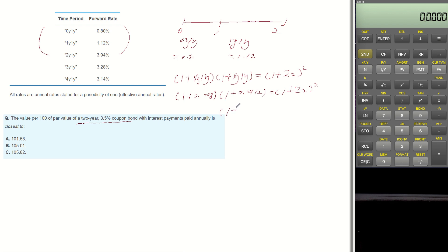Then 1 plus year 2 spot rate squared is 1.0193, so year 2 spot rate is 0.0096.